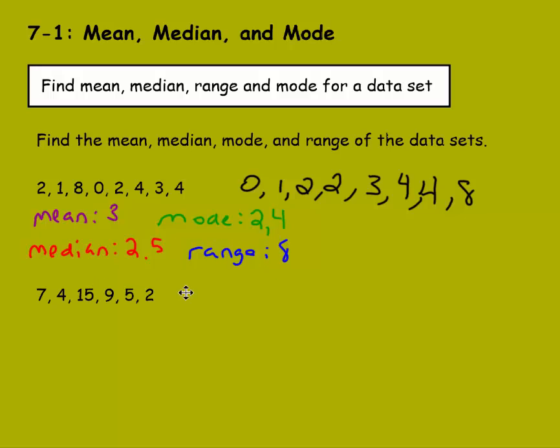Let's do the same with this data set. So we have 2, 4, 5, 7, 9, and 15. So finding the mean, we add the values and divide by the number of numbers. So we have 6, 11, 18, 27, and 42. 42 divided by 6 numbers would give us a mean of 7. So our mean is 7.